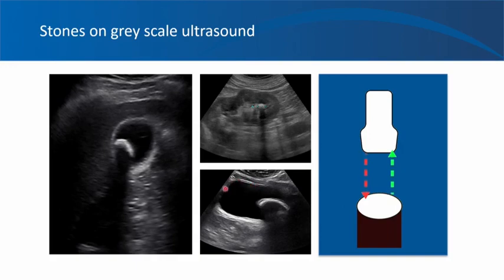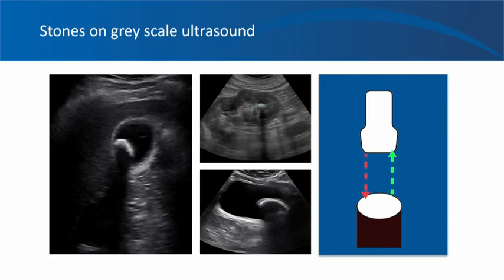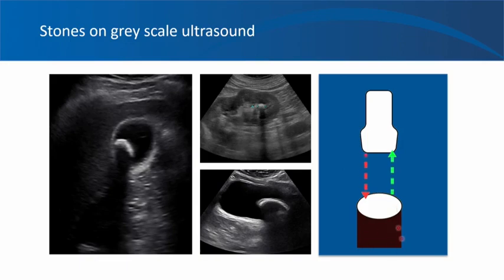And this is an example of a bladder stone where you can see a big horseshoe-shaped echogenic structure — that is the bladder stone — which is giving a shadow. This animation shows that the stone is not transmitting any sound and is reflecting most of the ultrasound beam, casting a shadow behind it.